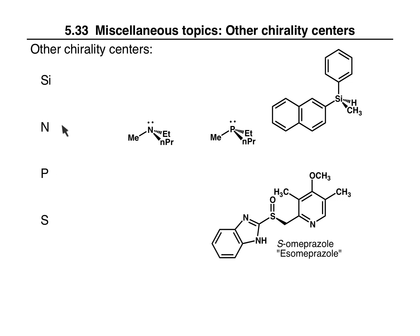Nitrogen and phosphorus are similar to each other because they're in the same column of the periodic table. In these examples there is a lone pair, and the lone pair counts as one of the different groups. So nitrogen is connected to a methyl, an ethyl, an n-propyl group, and a lone pair — four different groups. The same thing with phosphorus, so these are both chirality centers.